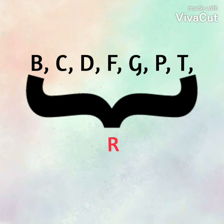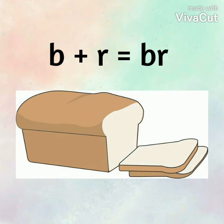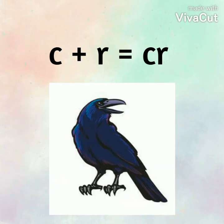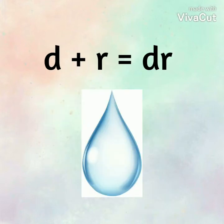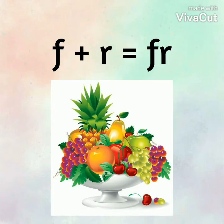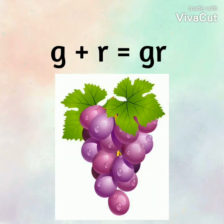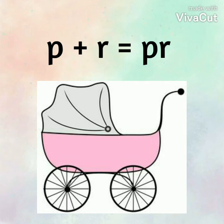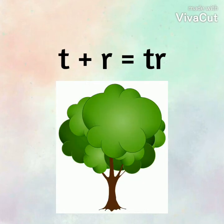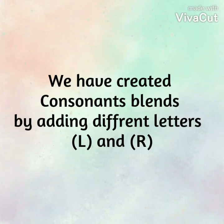Adding R: B plus R — BR as 'bread', C plus R — CR as 'crow', D plus R — DR as 'drop', F plus R — FR as 'fruit', G plus R — GR as 'grapes', P plus R — PR as 'pram', T plus R — TR as 'tree'.